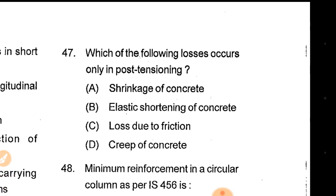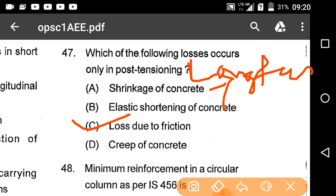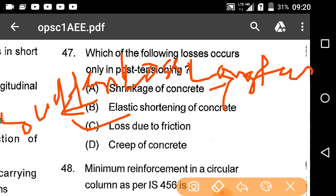Among the following losses, which occur only in post-tensioning: loss due to friction is only in post-tensioning; shrinkage of concrete is a long-term loss; elastic shortening of concrete is a short-term loss; creep of concrete is a long-term loss. Option C is the correct answer.